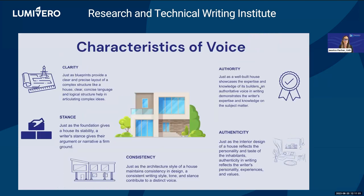When we think about these characteristics of voice, I think it's helpful to use the analogy of building a house. A blueprint for a house could represent clarity — just as blueprints provide a clear and precise layout for a house, you need clear and concise language to articulate complex ideas. There's also stance — your attitude toward the subject you're writing about. Just as the foundation of a house gives it stability, your stance gives your argument a firm foundation. Consistency is also important — you don't want to design a modern home and choose materials for a ranch-style home. Having consistency in your style, tone, and stance contributes to a distinct voice, and it's important to maintain that within a piece of writing.